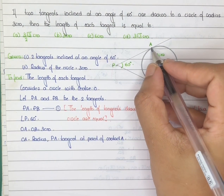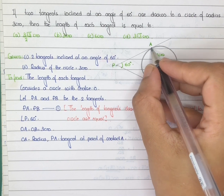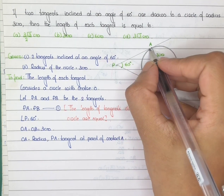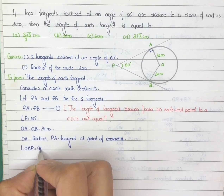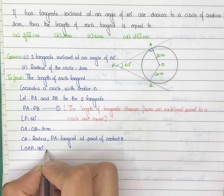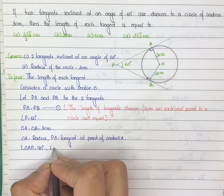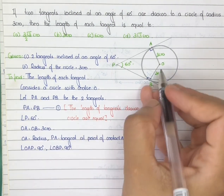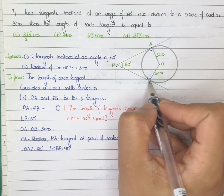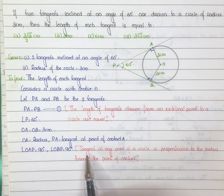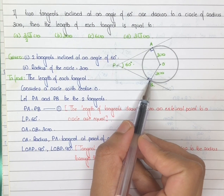Now OA is the radius and PA is the tangent, and A is the point of contact, which implies OA is perpendicular to PA — that is angle OAP is equal to 90 degrees. Similarly, angle OBP is equal to 90 degrees, since OB is the radius and PB is the tangent at point of contact B, so OB is perpendicular to PB. Reason: the tangent at any point of a circle is perpendicular to the radius through the point of contact.